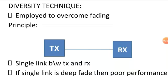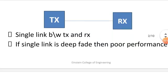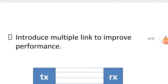This results in poor performance because we have only one link and that link is deep faded and we have no alternate path to transmit signal from transmitter to receiver. This is the problem in wireless communication system with this single link.